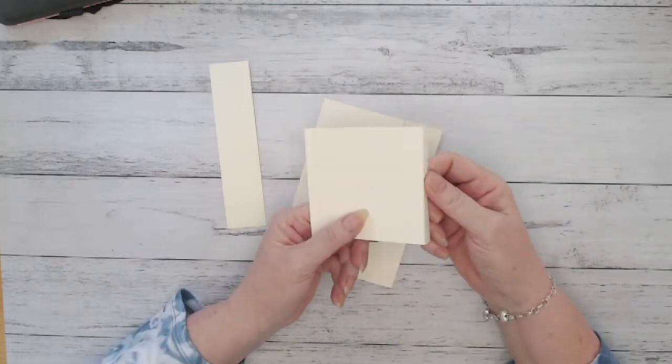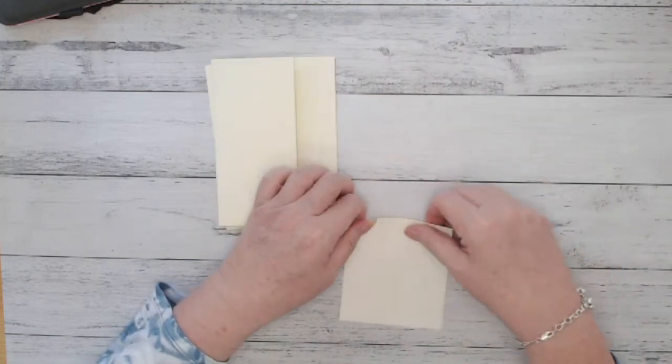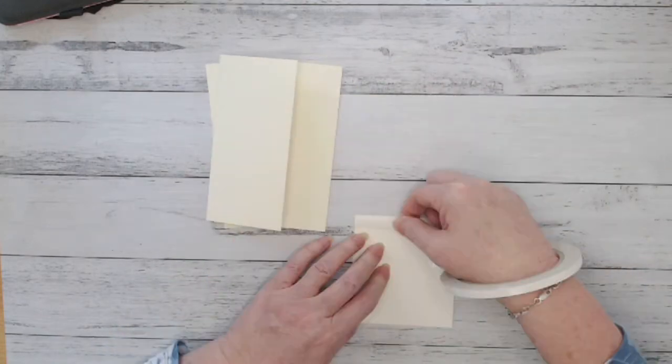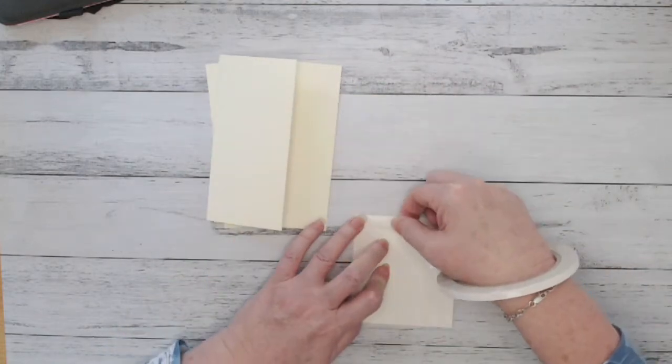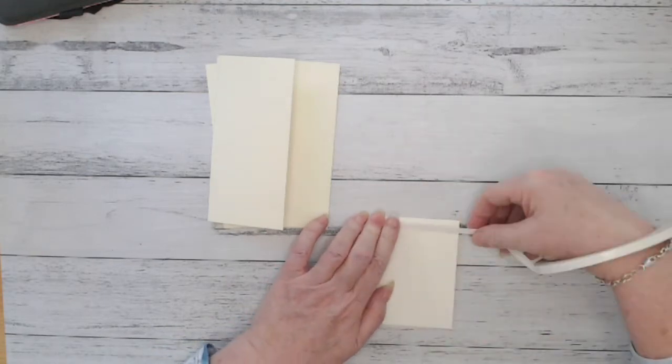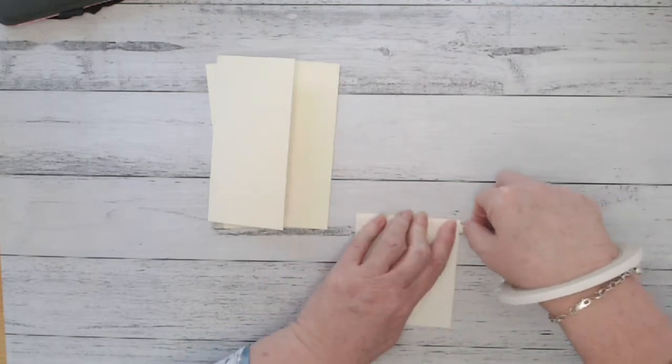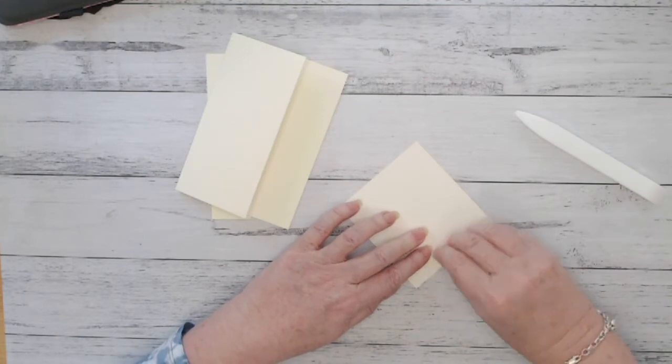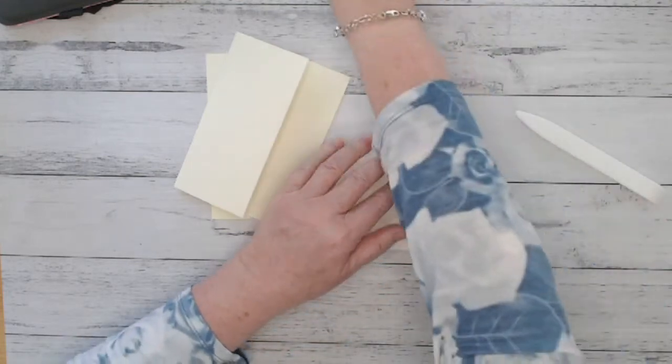Now I've cut out of the same colored card, the other A5 piece that was left over, a piece that's 10 centimeters by nine centimeters and I have scored it on the 10 centimeter edge at one centimeter. So that gives me a nine by nine centimeter square.